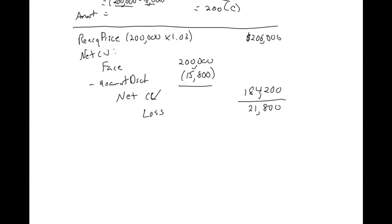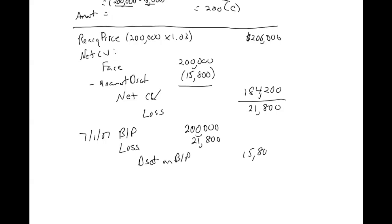If you go back and watch the previous video, you'll see I did this same setup to get the loss. I like to do things the same way every time so at test time I can remember. This is also happening on 7/1/07. We've got the bonds payable coming off the books — that account is now zero. We record the loss on the early extinguishment of the debt for $21,800. We have the discount on bonds payable also coming off the books at $15,800 — that account is now zero because we're retiring the bonds. And then we pay out cash for the reacquisition price of $206,000. This problem is more involved than the previous video because we had to catch everything up to where we were in time and then do the retirement entry.